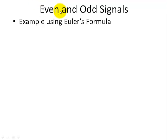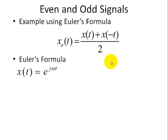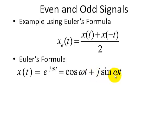Let's apply what we just learned about even and odd signals — namely that an even function is x of t plus x of minus t divided by 2. Now we're going to use the famous Euler's formula, where e to the j omega t equals cosine of omega t plus j sine omega t. That's our definition of x of t, so it's basically a complex number. We can think of Euler's formula as the polar form for a complex number with a magnitude of 1 and an angle of omega t, and the rectangular form with real component cosine omega t and imaginary component sine omega t.